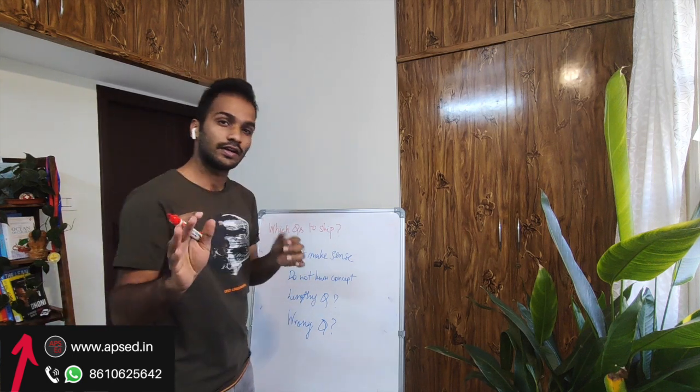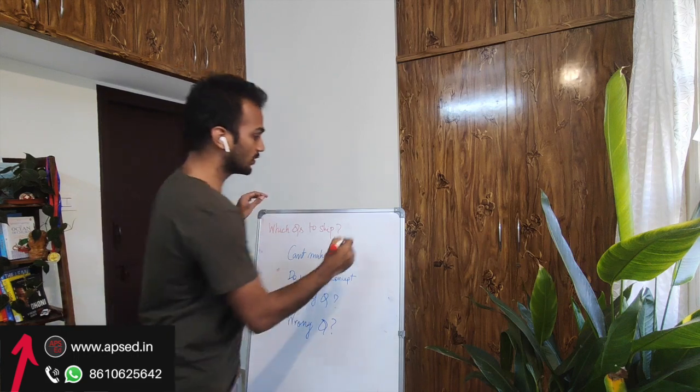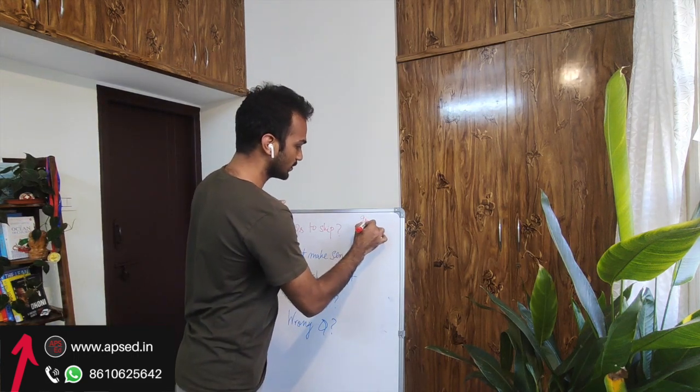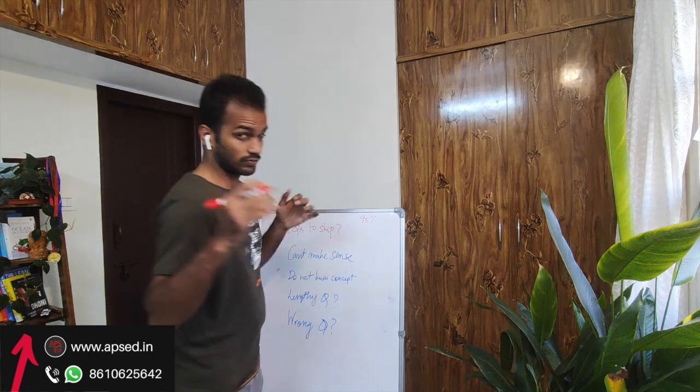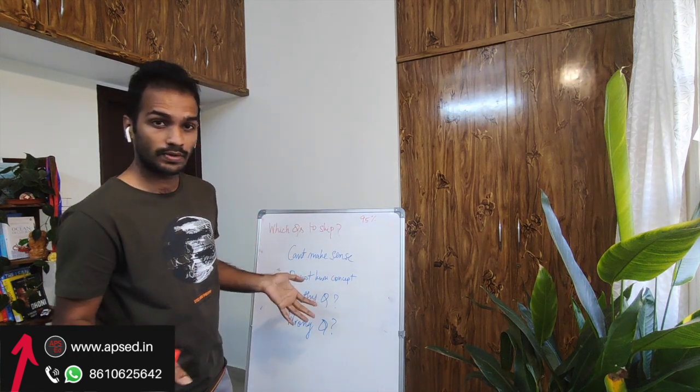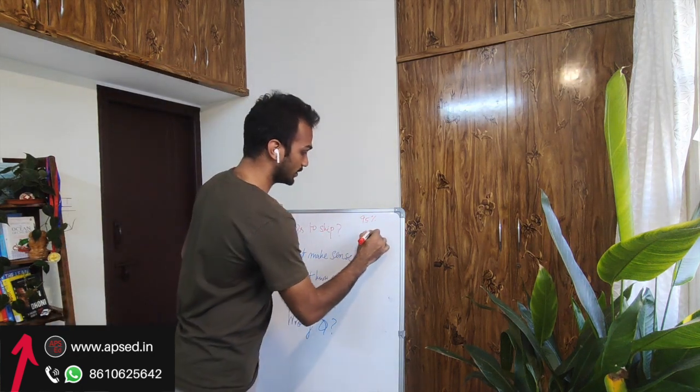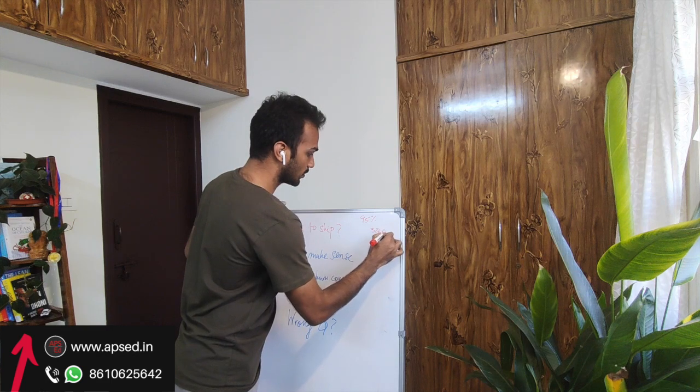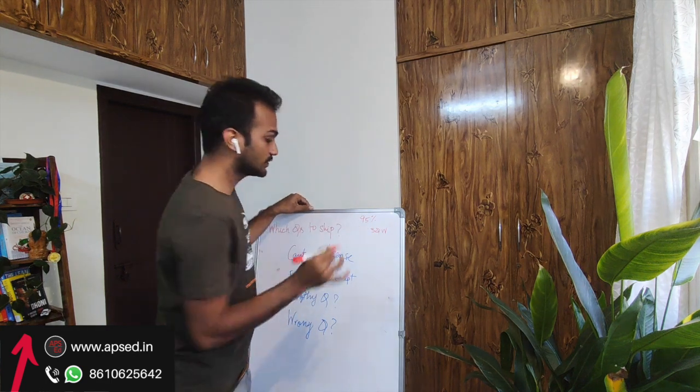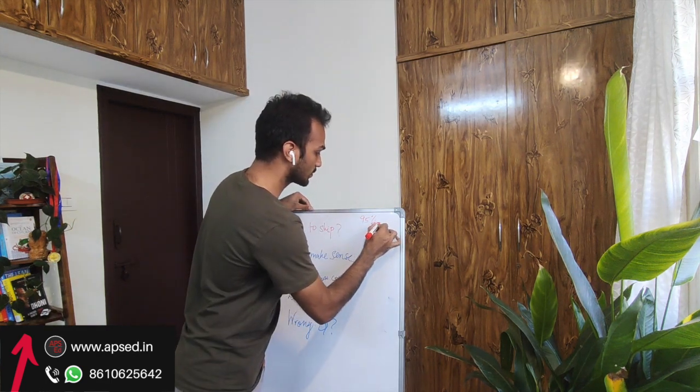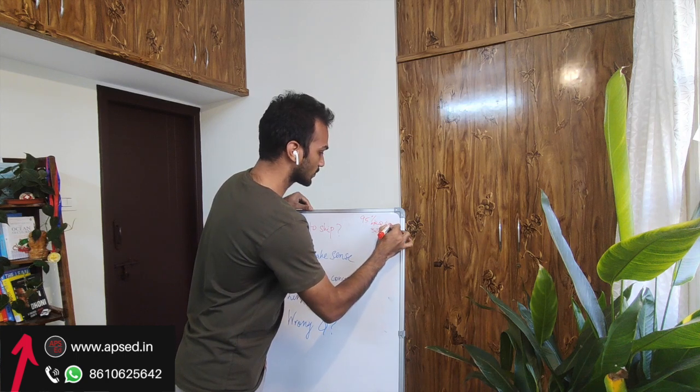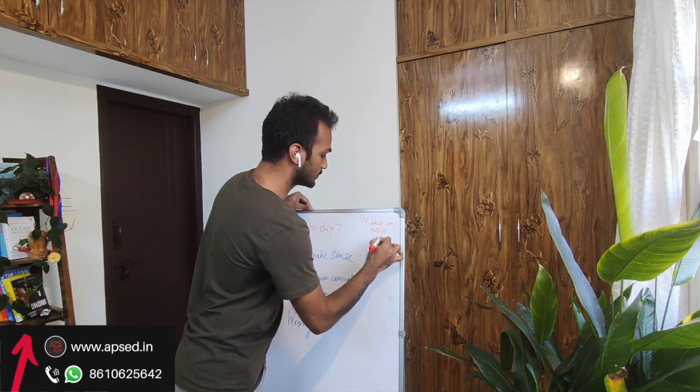Let's say you are attempting questions at 95% accuracy, which means you will just get 2 or 3 questions wrong in the full paper. So let's say you get 3 questions wrong. So you need to get at least 50 questions correct and the rest 12 questions you can skip.